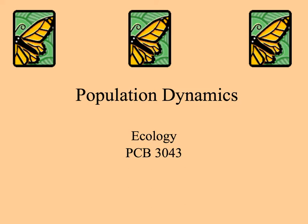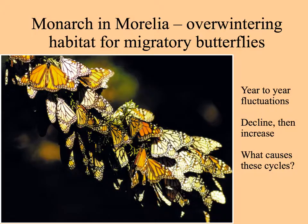Population dynamics. Monarch butterflies migrate many miles, and people have monitored their numbers in certain special places, like in Morelia in Mexico, where millions of butterflies overwinter. From year to year, the numbers fluctuate — they decline and then increase. So what is it that causes these cycles?